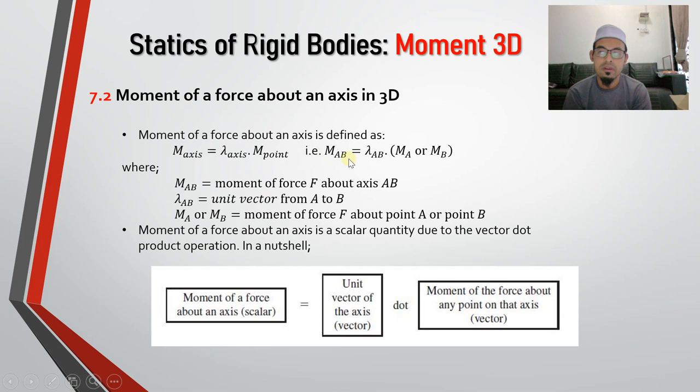So for example, if we need to find moment about axis A to B, from A to B. So what is our formula? M_AB equals to lambda A_B. What is lambda? Lambda is basically unit vector from A to B. Remember, unit vector from A to B dot with M_A or M_B. M_A is moment about point A and B is moment about point B. So this is our definition.